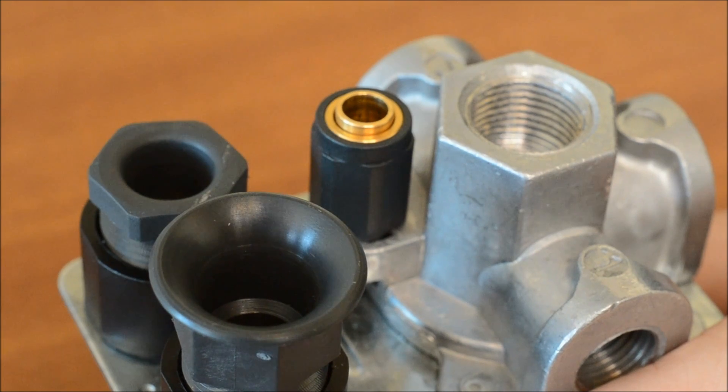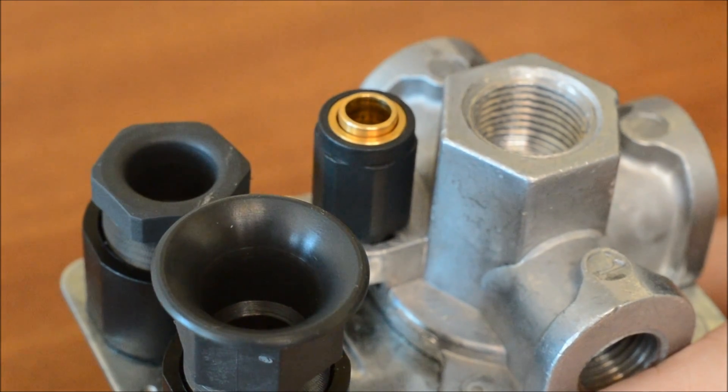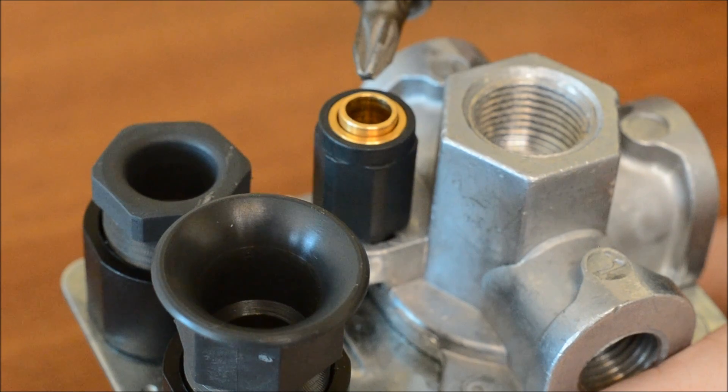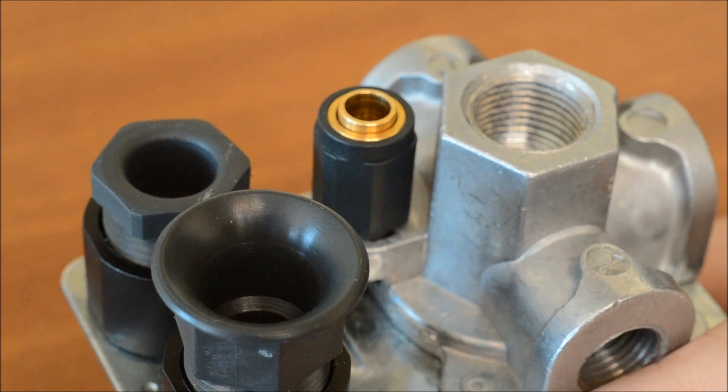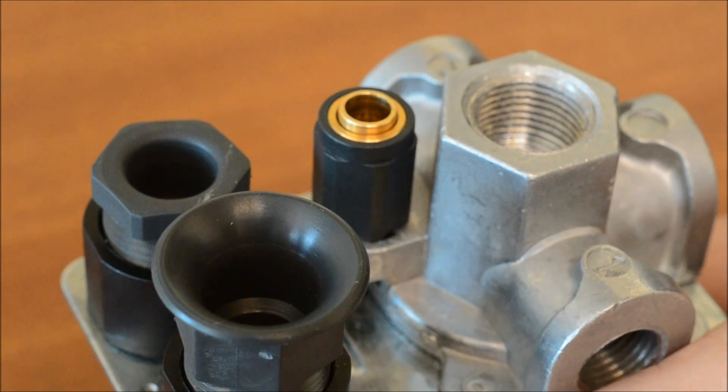The MDR1 is fitted with an unloader valve built-in, which has a 6mm push-in connection on the bottom. The purpose of the unloader valve is to remove pressure from the piston of the compressor and allow it to start without stalling.